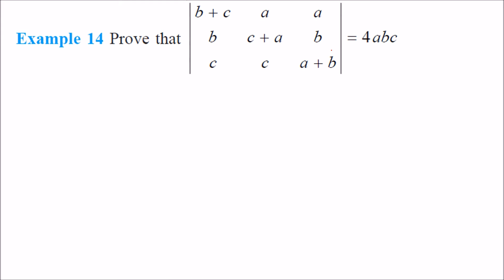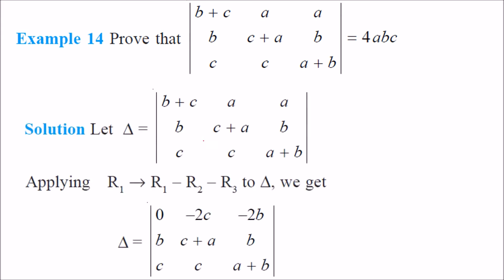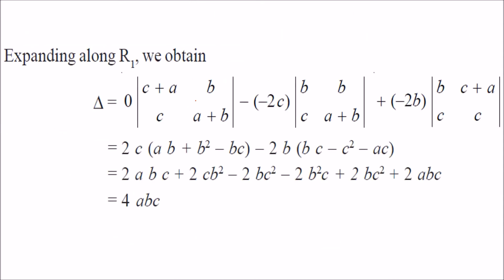We have to prove a determinant equals 4abc. We change row 1 by subtracting rows 2 and 3 from row 1, obtaining some intermediate form with zeros. Then expanding and simplifying gives 4abc. Only one row transformation is needed here.